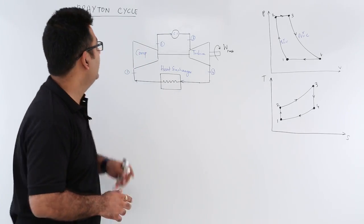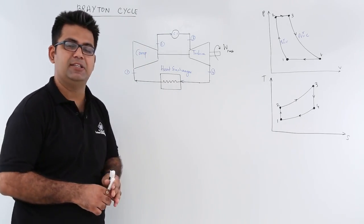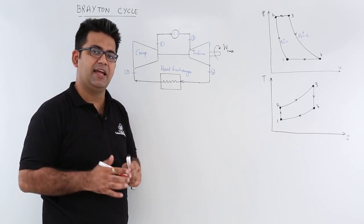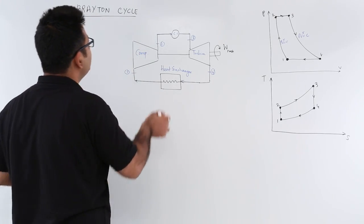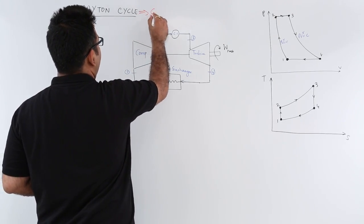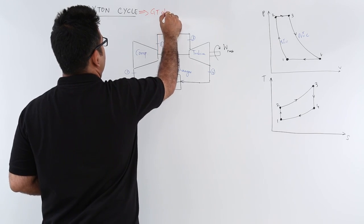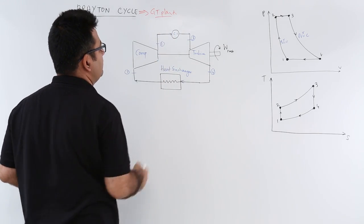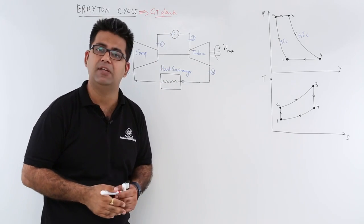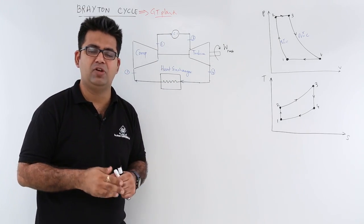Now let's come to the last gas power cycle, that is the Brayton cycle. The Brayton cycle is an ideal cycle for gas turbine plants, so where we implement gas turbines, we use the Brayton cycle.